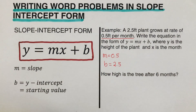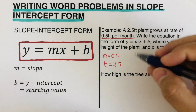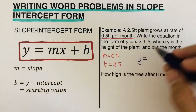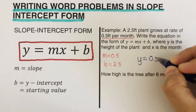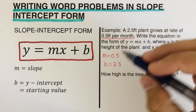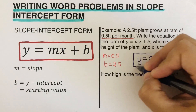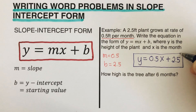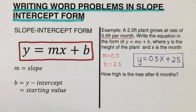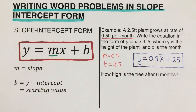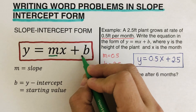From here, we can write the equation as y equals 0.5x plus 2.5. In order to write the slope-intercept form of a given word problem, we only need to determine what m is and what b is.